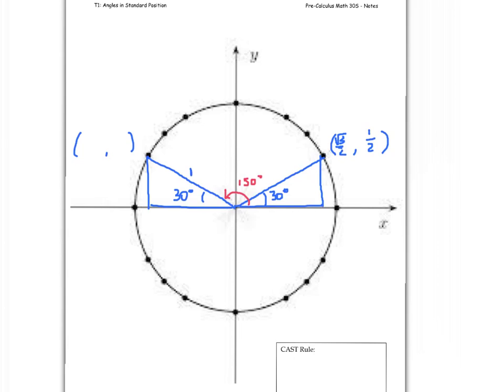They both have a hypotenuse of 1, and they would have the same x and y values, except that the x, well, it's negative because we're over to the left. So, in fact, the cosine is negative root 3 over 2, and the sine is positive one-half.